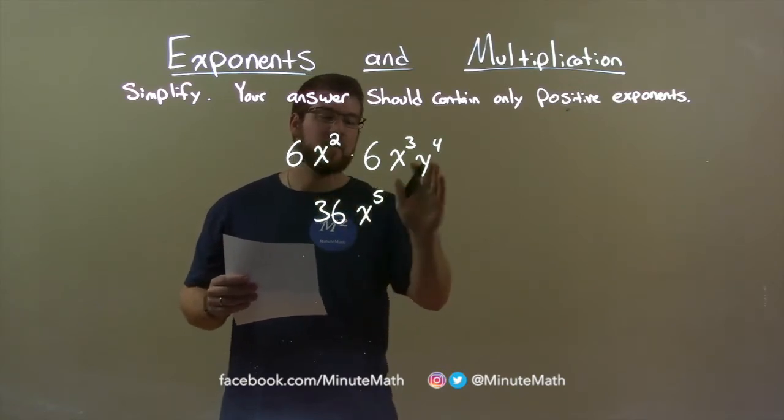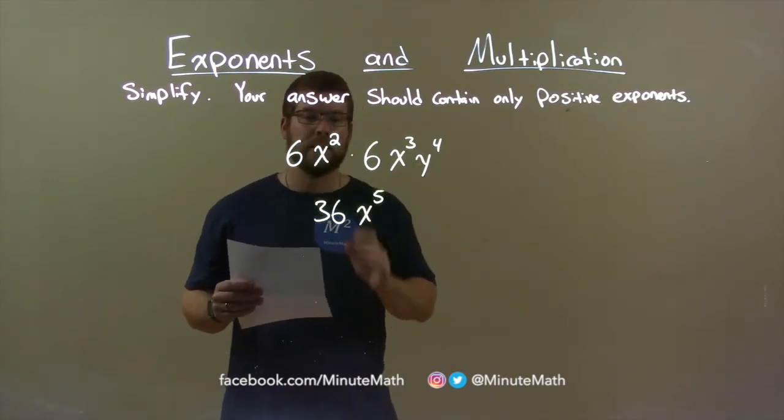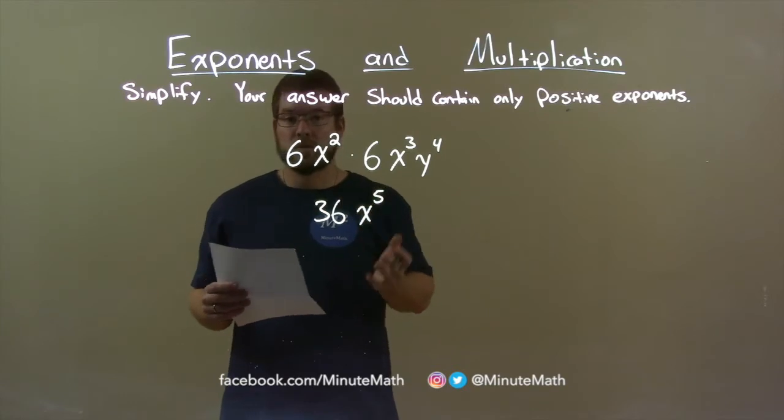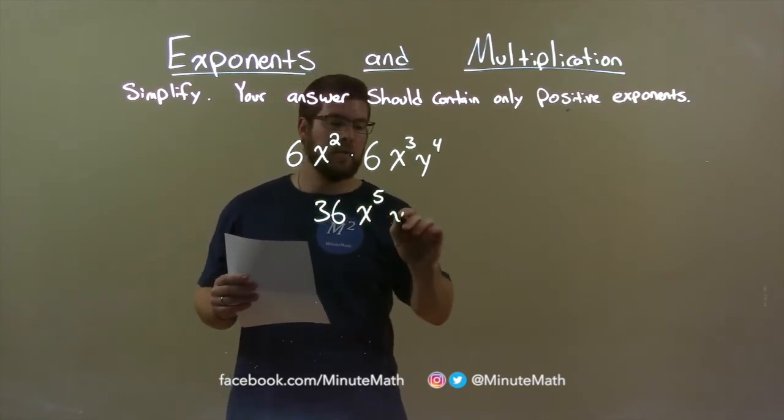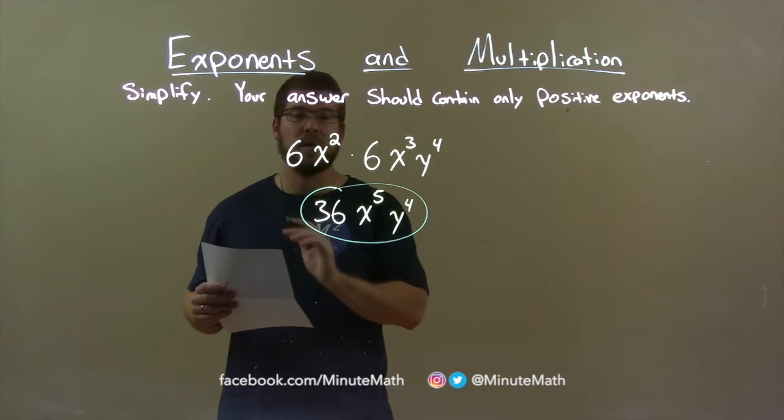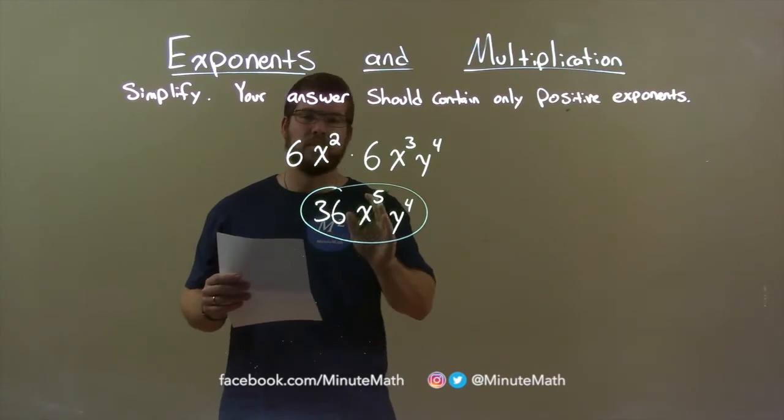We're done with the first term, and the second term has a y in it. So, there's no other y to multiply, so we just bring down y to the fourth power, and now we're done. Final answer, 36x to the fifth power, y to the fourth power.